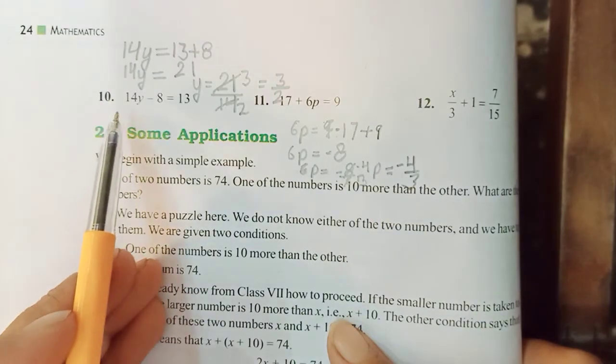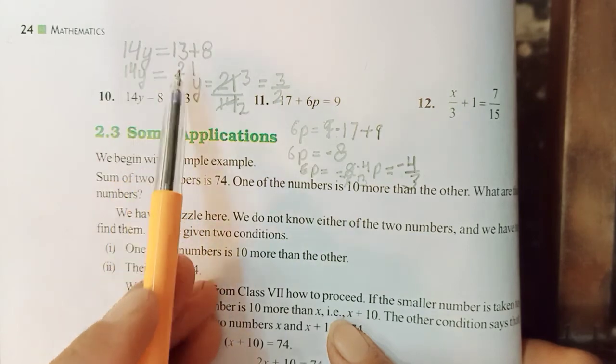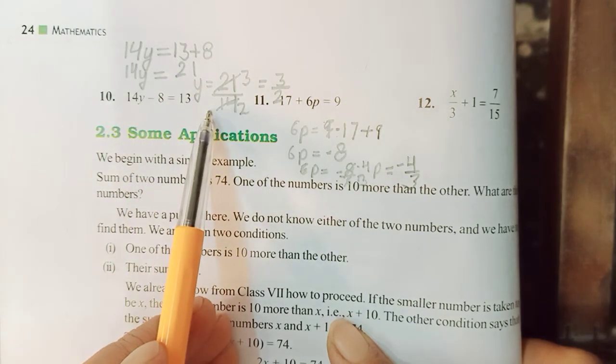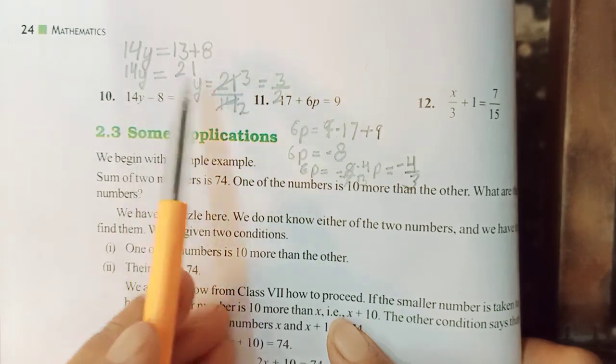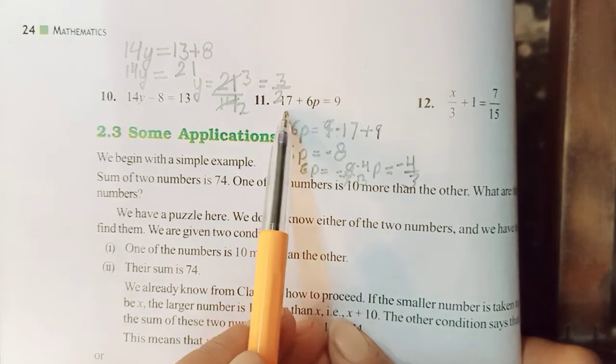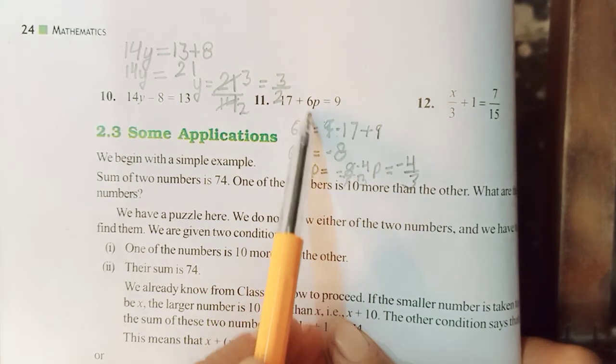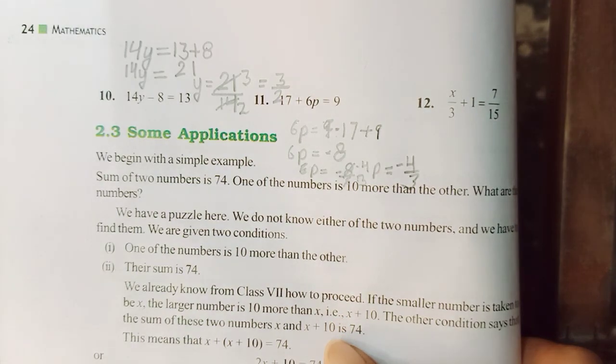Here also I have just left this 10th and 11th for you girls to try on your own. And the working will be simple. Taking this 8 to the other side. So this becomes plus 8. And then whatever is the resultant upon 14. So likewise here first you will remove this 17. Then you will bring this 6 to the numerator. So just try them. They are simple. You will easily get them.